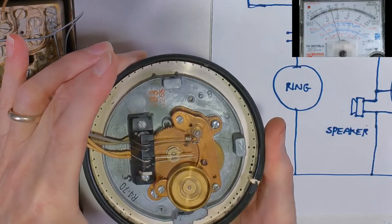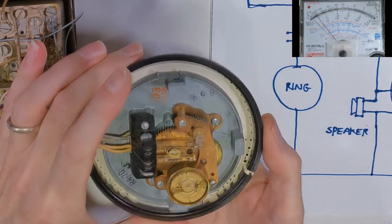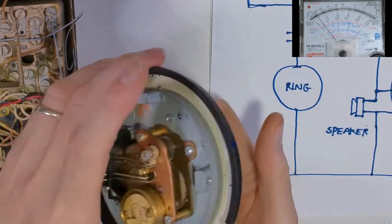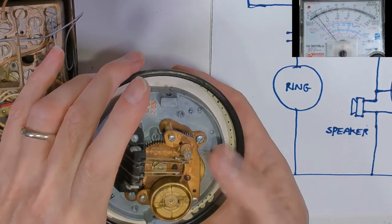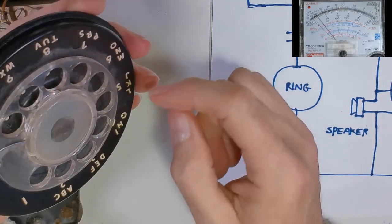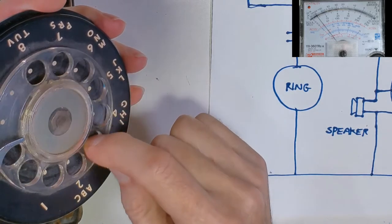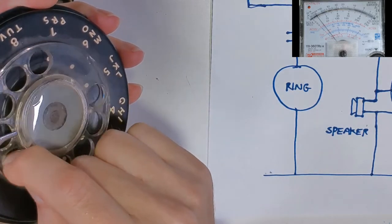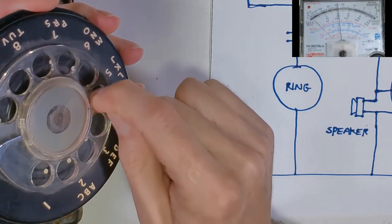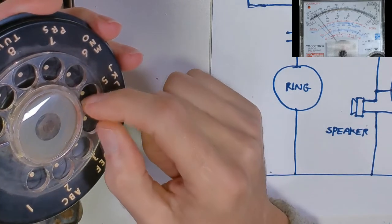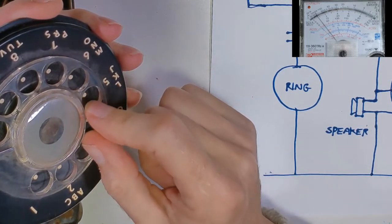Now the problem is that if that's all it did, we'd have a problem because if we were to dial a five it would make and break five times as we went that way and another five times as we went back. That would then tell the phone exchange we've dialed a 10 not a five.